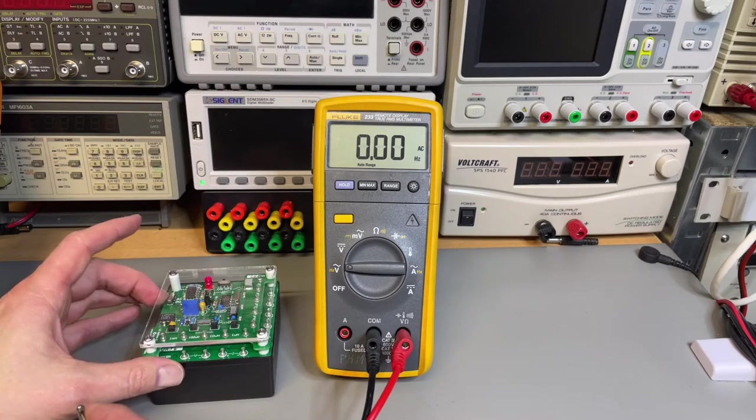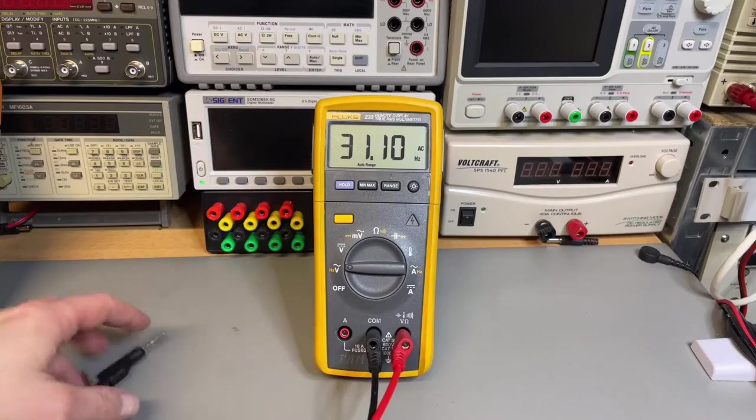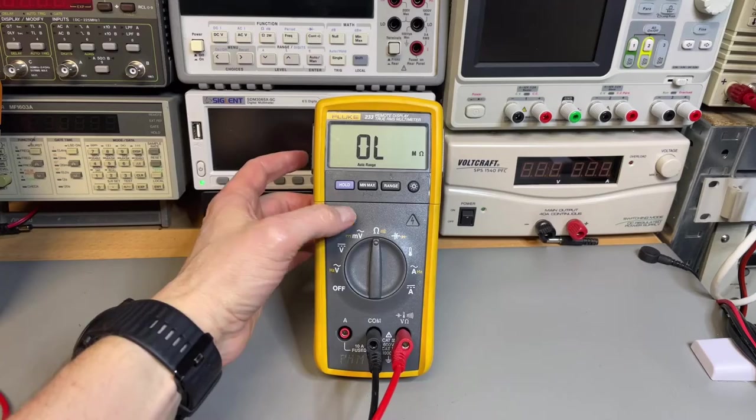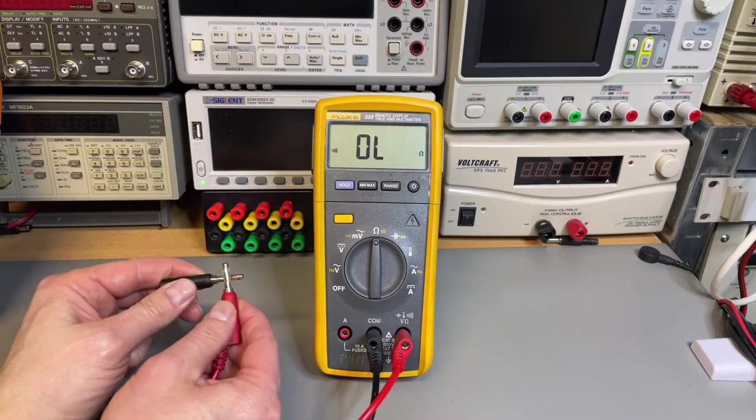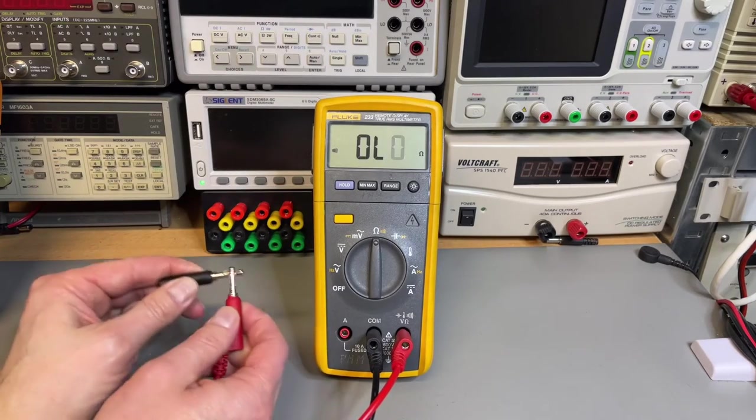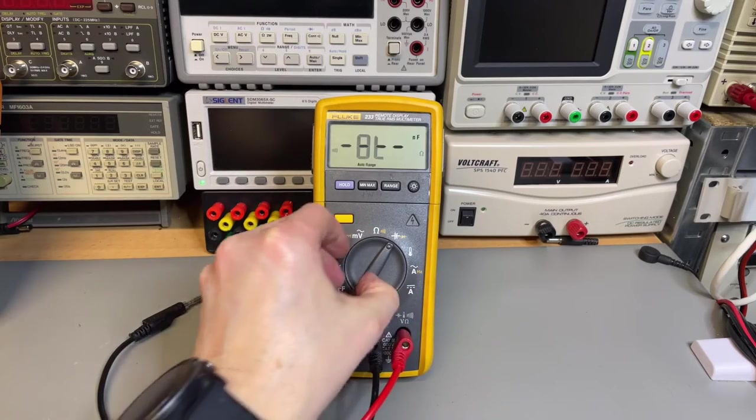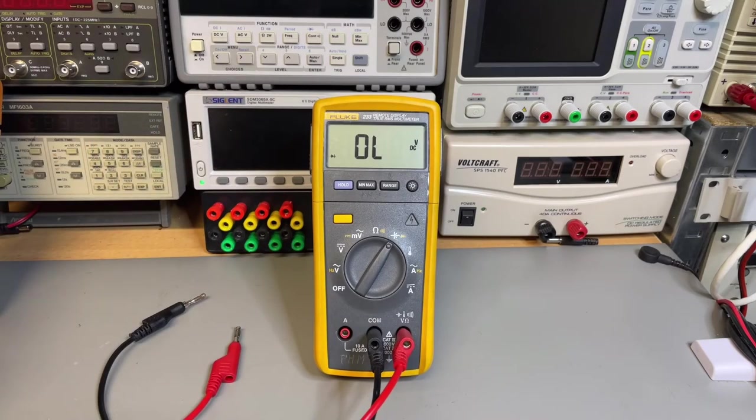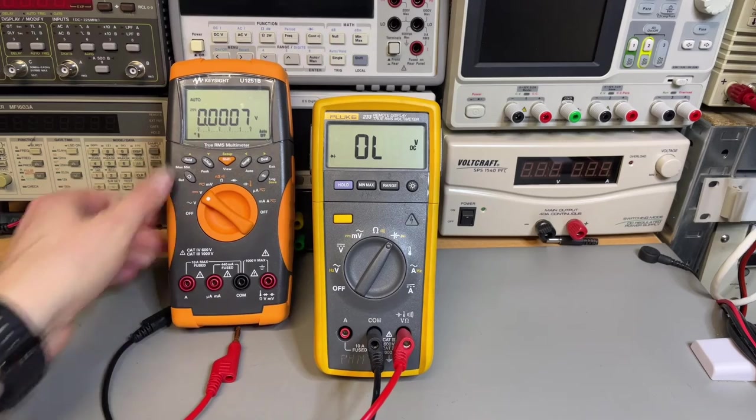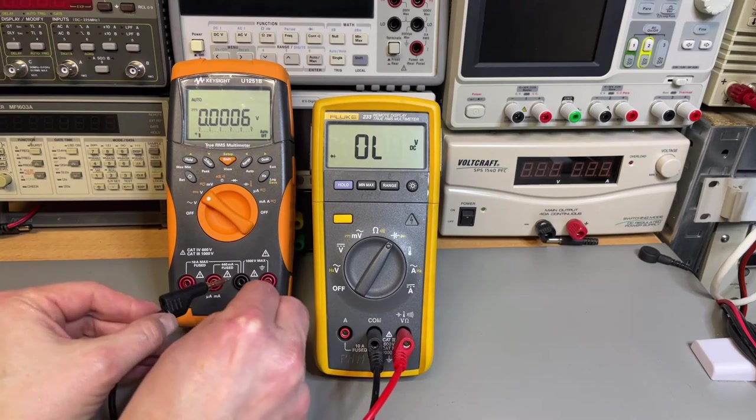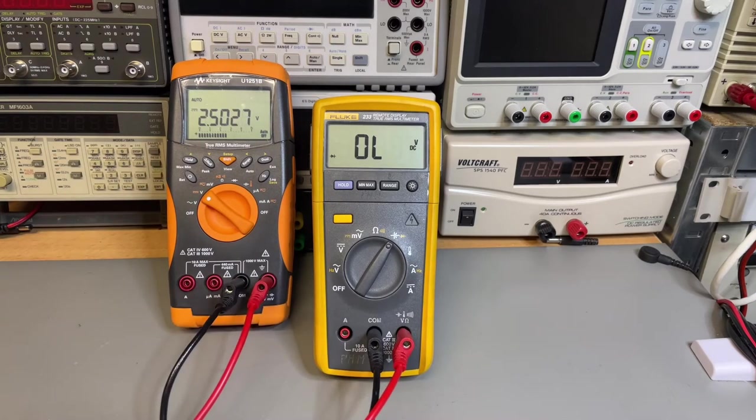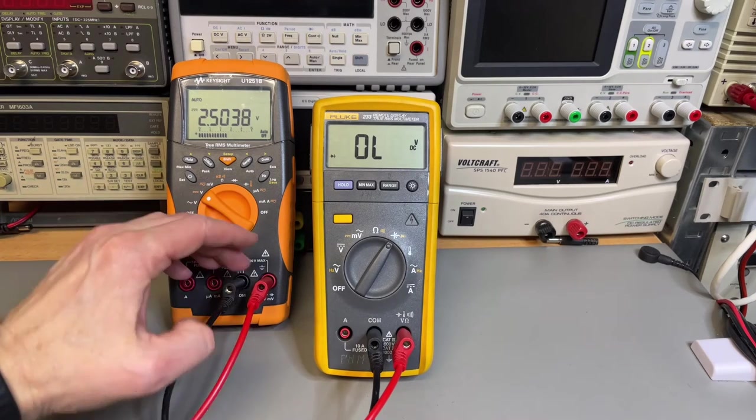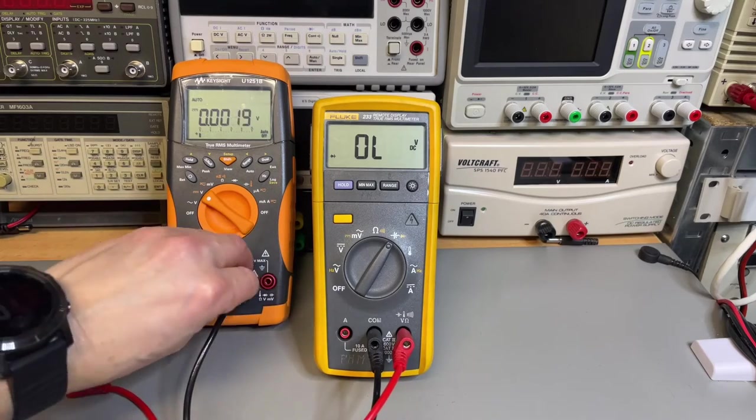If you wonder about the diode mode - here we also have the ohms and the continuity. Also works. The diode mode. And how much voltage does the diode mode use? Well, it uses 2.5 volts. It's a bit low - usually they use 2.7, but that's probably enough.